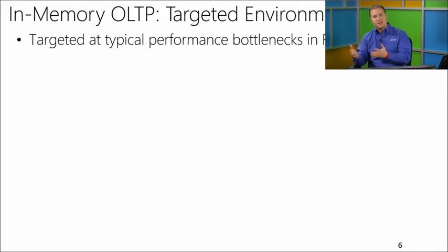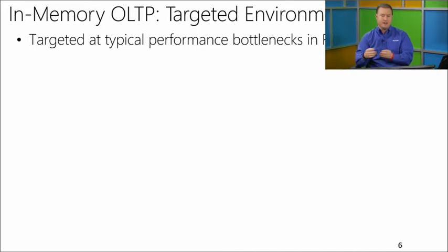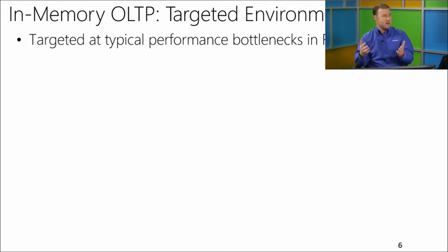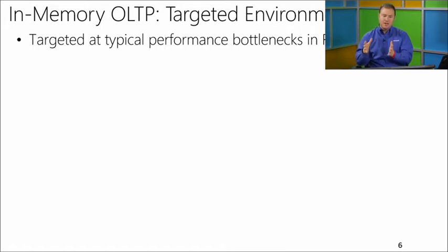When you create memory optimized tables, you get flexibility in terms of durability characteristics. You can create them as schema and data, which gives you full durability, or as schema only. With schema-only tables, you can take advantage of transient data where you don't need persistence — you just recover the schema and replay the data as needed. So in-memory OLTP is really targeted at those typical performance bottlenecks in the relational database system.